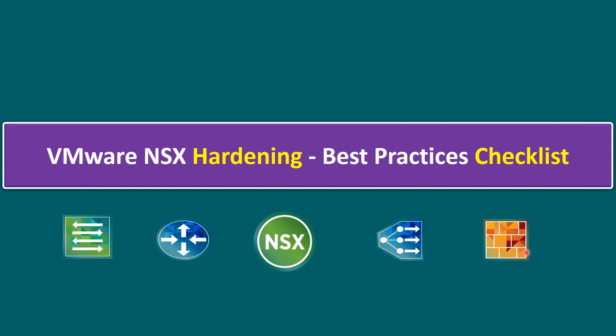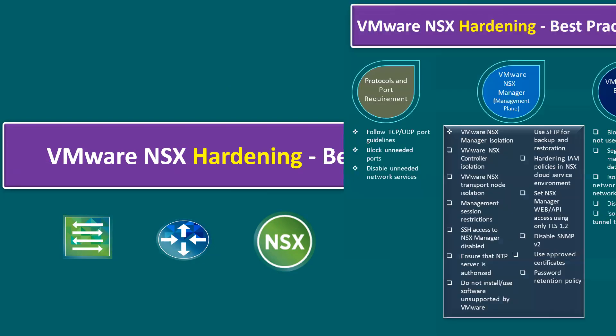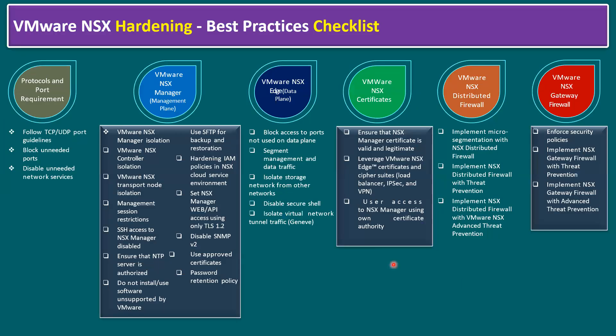When performing hardening within our NSX environment, make sure we cover all these components. Here is the complete best practices checklist for hardening on NSX. These items must be covered, and if you need to exclude or provide an exception for any item, we should maintain an official KB article to cover that exception.